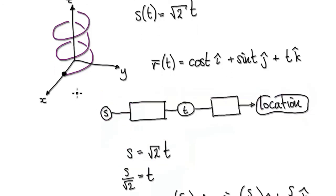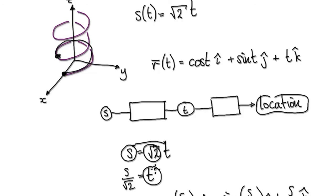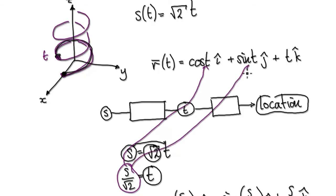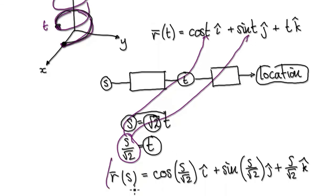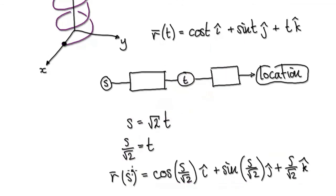So looking at this, let's say you insert this length here. You can work out the time by dividing both sides by square root of 2 — that will give us the time. Once we know the time it takes to get from here to here, well, this is our time. We can put it back into the position vector to find out its location. That will give us this. So now we have a way of finding out the location for a given arc length.